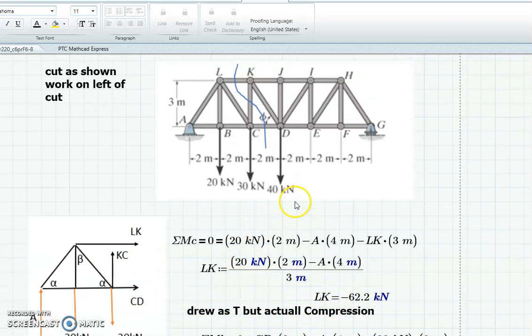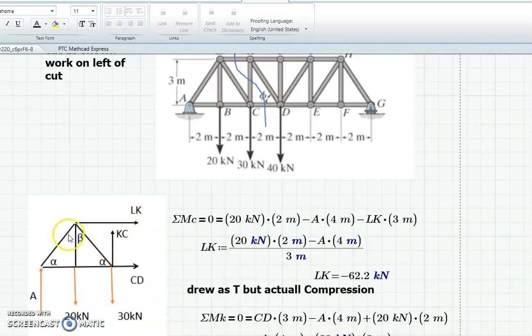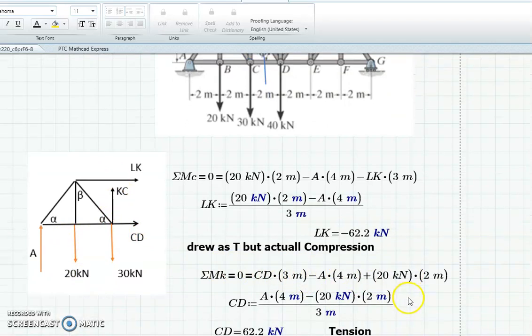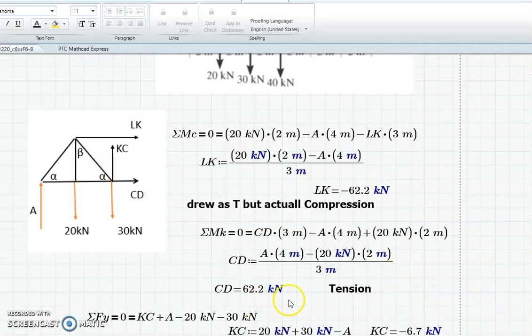Then you do the moments about K, notice you can do moments about places where your forces, there aren't on your truss, but when my forces come together there, so if I do it about K, it gets rid of both of these, all I have to worry about is the A, the 20, and CD. And then I can solve for CD, and I get it, it came out positive, so it's actually a tension.